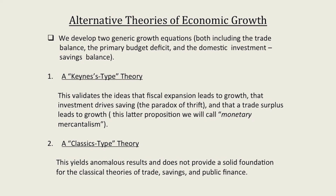The first one is what I call a Keynes-type theory. This will validate such controversial issues as that fiscal expansion leads to growth, that investment drives savings — not the other way around — the paradox of thrift. It will also validate, thinking about the case of China, that a trade surplus leads to growth, which I call monetary mercantilism.